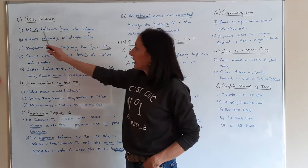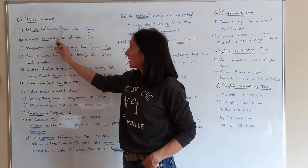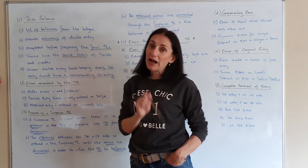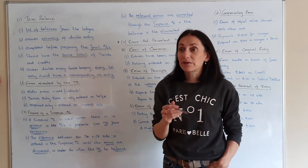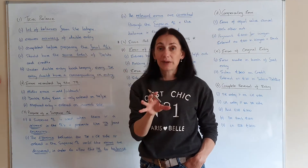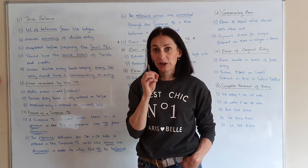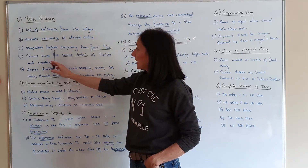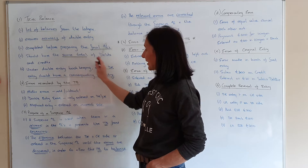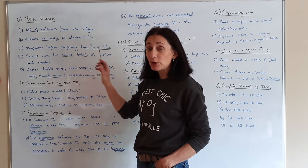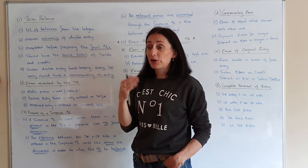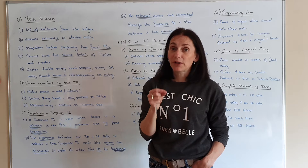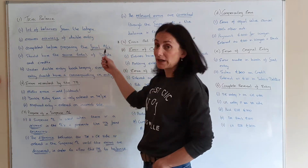The trial balance is a list of balances from the ledgers. It ensures accuracy — they want that word 'accuracy' — so it ensures the accuracy of your double entry. You're doing the trial balance to make sure every debit had a corresponding credit. It's completed before preparing the final accounts, because you'd never go straight from the ledgers into your final accounts without making sure they were correct.